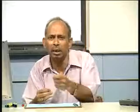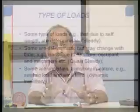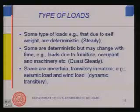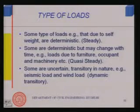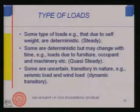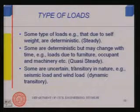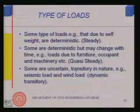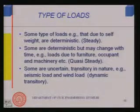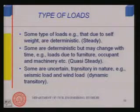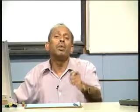The third type of load is totally uncertain and transitory — these loads come suddenly, act for a very short period of time, and then are gone. They are uncertain because their value cannot be determined precisely with current scientific knowledge. Seismic load (due to earthquake) is a prime example — it is very difficult to predict its amplitude or the force imparted to the structure.